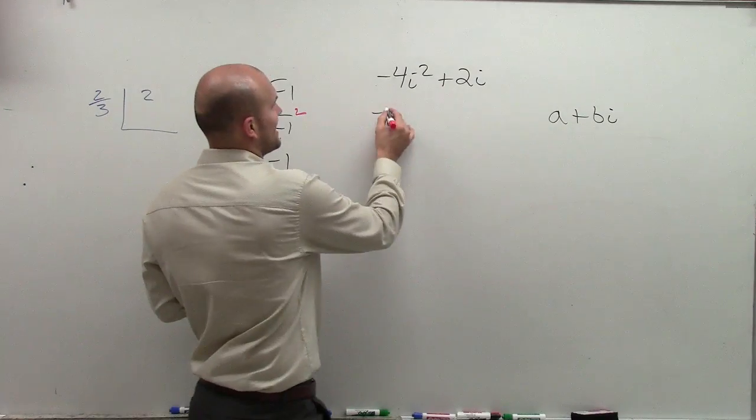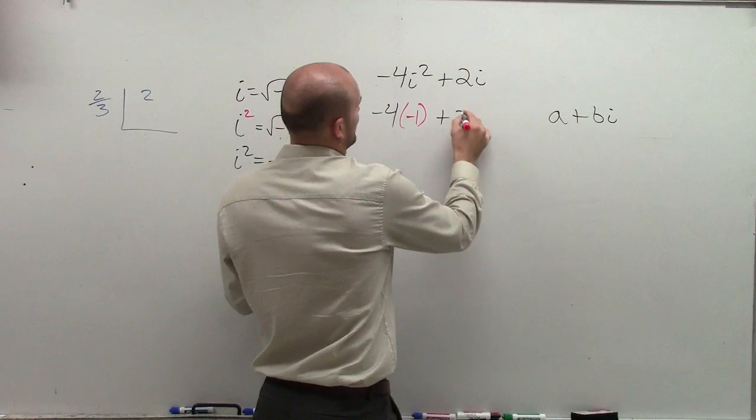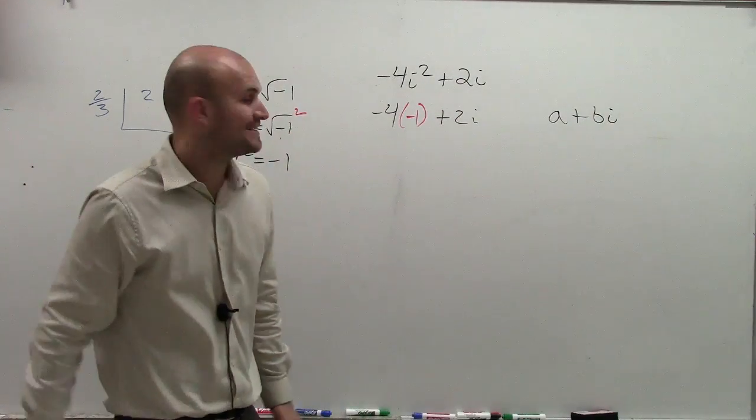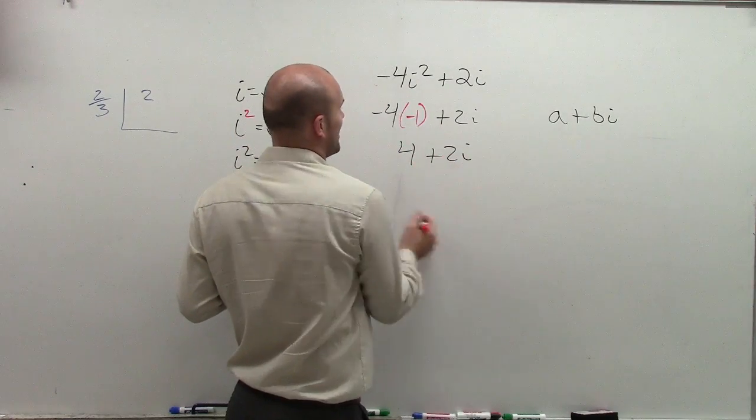So what I'm going to do is I'm going to replace i squared with the negative 1 plus 2i. A little tricky, isn't it? So negative 4 times negative 1 is now going to give me a positive 4 plus 2i.